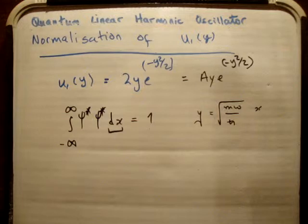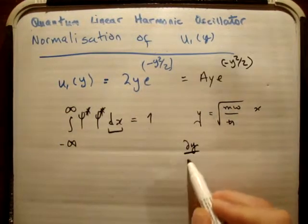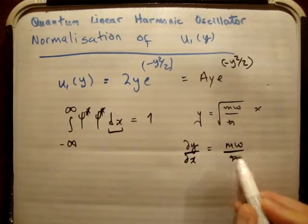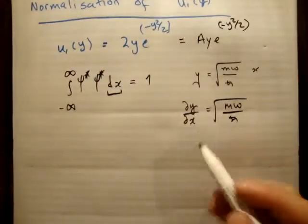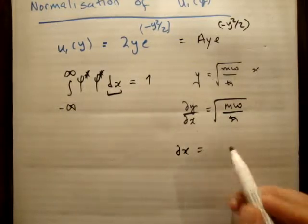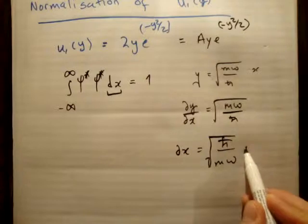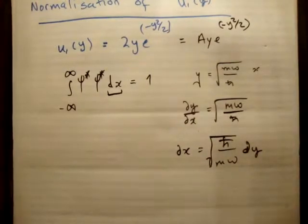So how do we get our scaling factor? Well, if we get dy dx, or I know I'm drawing dels, but anyway, that's just going to be m omega over h bar root of. That means, basically, that del x is equal to h bar over m omega root of times del y, or dy. So that's our scaling done.